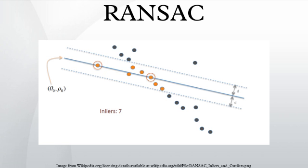Return: best fit, model parameters which best fit the data. Iterations equals zero. Best fit equals nil. Best error equals something really large.